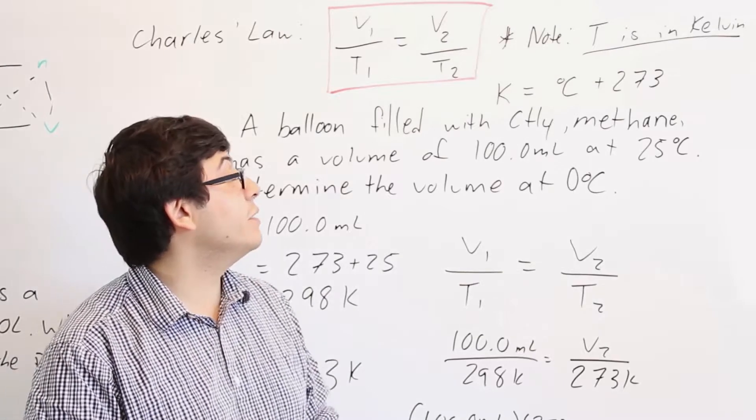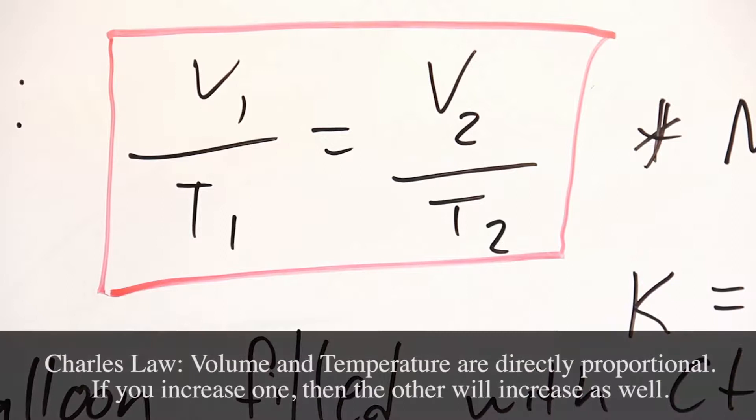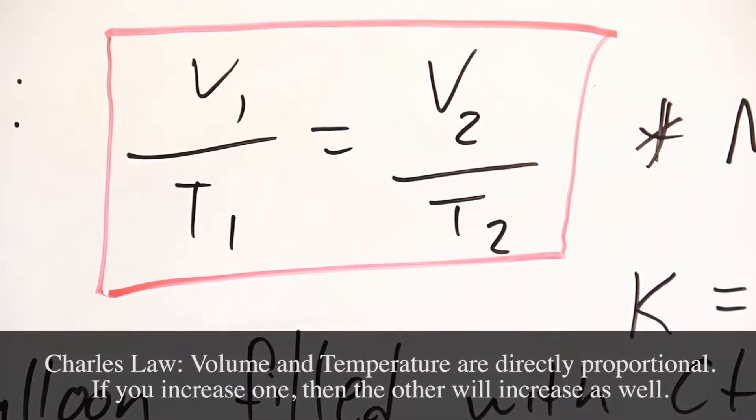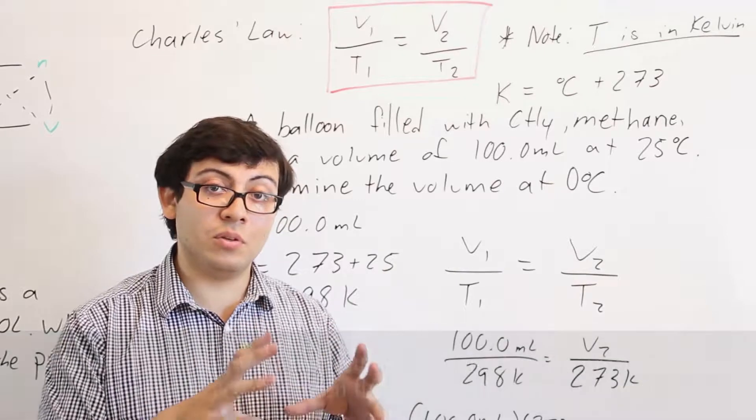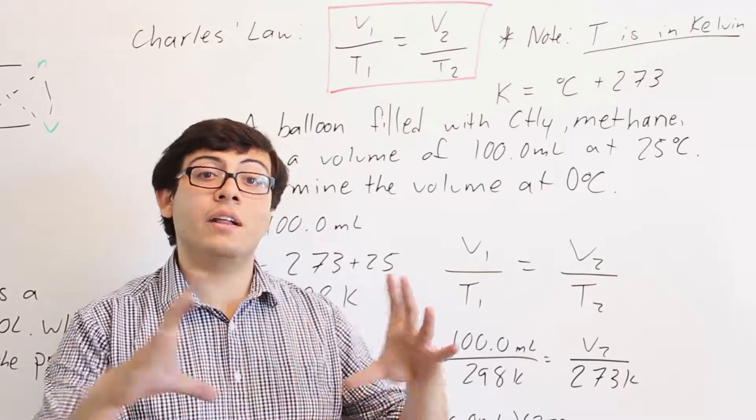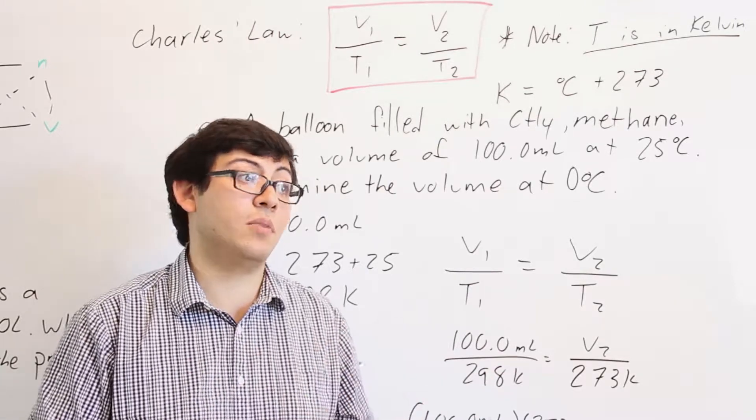Let's talk about Charles' law now. So Charles' law says that volume and temperature are directly proportional. So as you increase the temperature, you're going to increase the volume. Imagine this as a balloon, and as you're heating up the balloon, so say for example if you leave it outside in the sun, it'll actually expand. Sometimes people leave their balloons out in the sun for too long, and sometimes they'll pop.